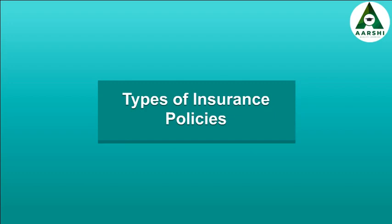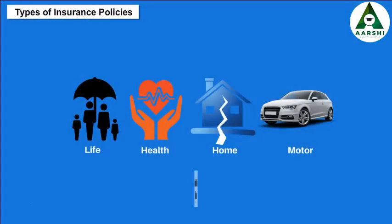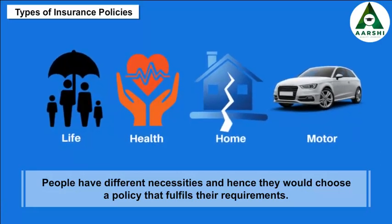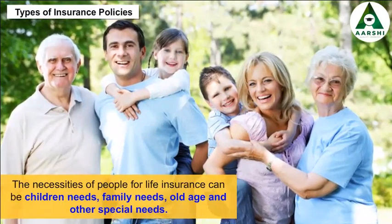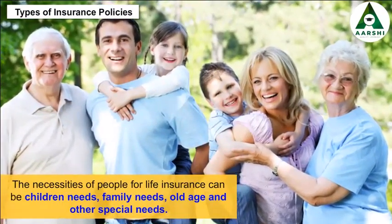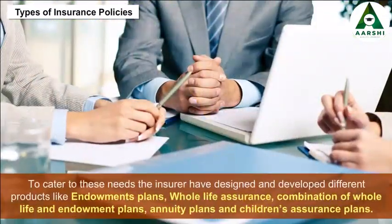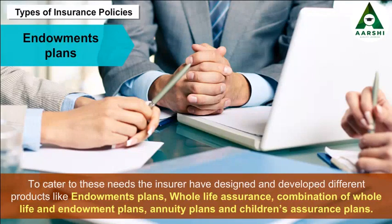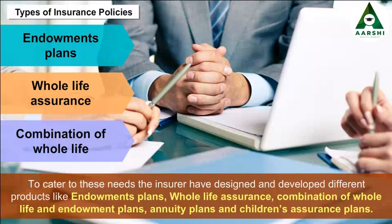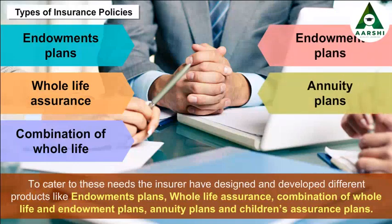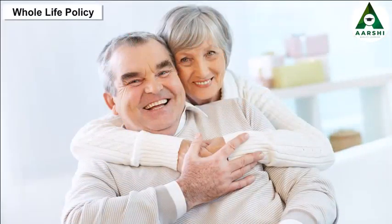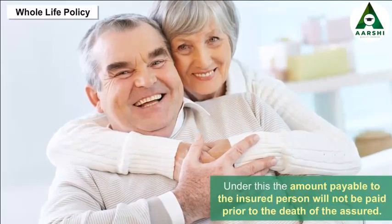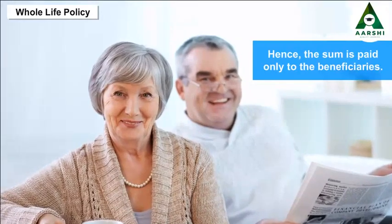Types of Insurance Policies: People have different necessities and choose a policy that fulfills their requirements — children's needs, family needs, old age, and other special needs. The insurer has designed products like endowment plans, whole life assurance, combination of whole life and endowment plans, annuity plans, and children's assurance plans. Under a whole life policy, the amount payable will not be paid prior to the death of the assured — the sum is paid only to the beneficiaries.